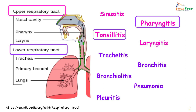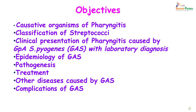Today's lecture will be restricted to pharyngitis and tonsillitis. The objectives are to know the causative organisms of pharyngitis, discover the classification of streptococci, see the clinical presentation of pharyngitis caused by group A Streptococcus pyogenes and determine its laboratory diagnosis, understand the epidemiology of GAS, pathogenesis, treatment, and learn about other diseases caused by group A streptococci as well as the complications.